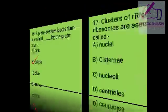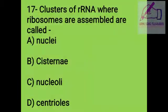Question 17: Clusters of RNA where ribosomes are assembled are called: A. Nuclease, B. Cisternae, C. Nucleolus, D. Centriole. The right answer is C, nucleoli.